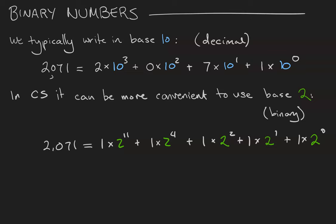In this video we're going to talk about binary numbers as an alternative to our typical base 10 or decimal number system. You can see here the number 2071 written out in base 10. Each numeral 0 through 9 represents a certain number of powers of 10 within the number.